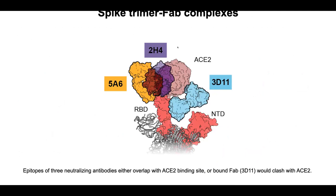As Charlie showed, we determined structures of a number of these antibodies — our three characteristic ones: 5A6, the most potent; 3D11, which has a different epitope; and 2H4. Looking at the structure of the Fab binding to the RBD domain, you can already understand some key points. For example, here you can see that 5A6 and 2H4 directly compete with the ACE2 binding epitope with certain overlap, while 3D11 binds at a site that does not directly overlap the epitope but is still directly competing with ACE2 binding.